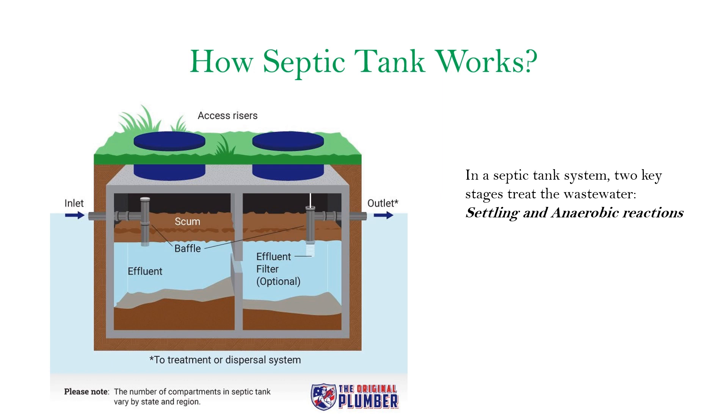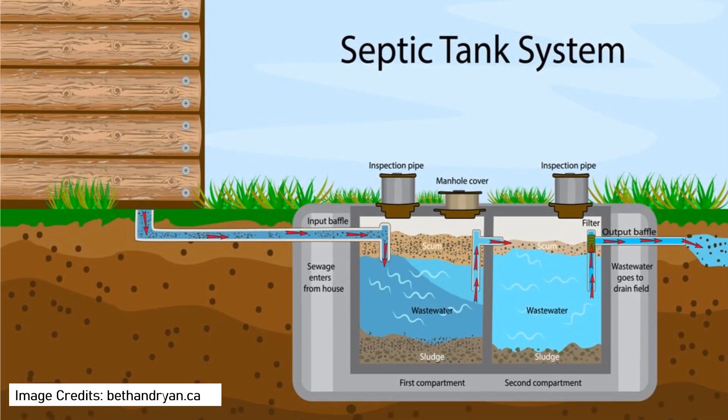The wastewater entering the tank separates into three parts: solids, effluents, and scum. Solids sink to the bottom and turn into sludge. The solids are decomposed by microorganisms in the absence of oxygen, thus forming the main anaerobic reaction in the system. At the same time, the scum, like oil and grease, floats on top.